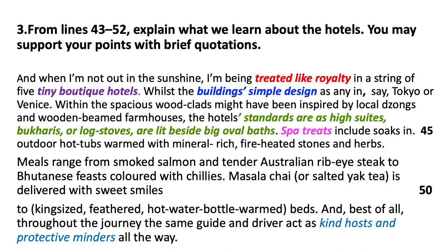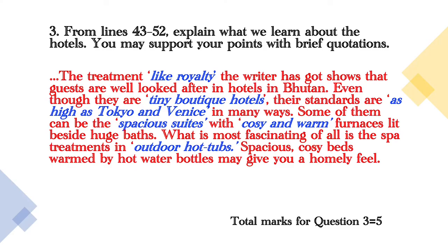The third question is to explain what you learn about the hotels, and the answers should be taken from lines 43 to 52. Remember you need to write five points, as the question carries five marks. This is how I answered Question 3 using brief quotations.